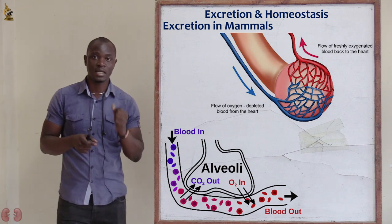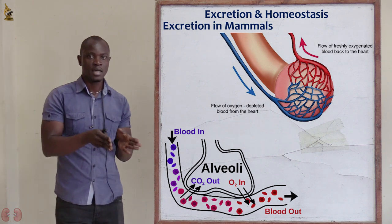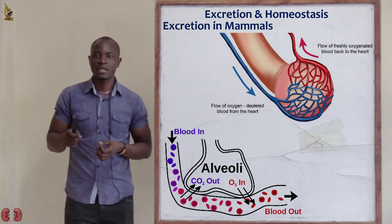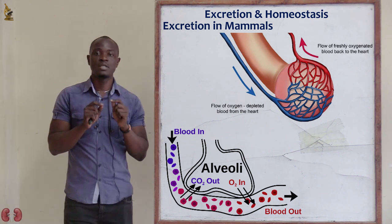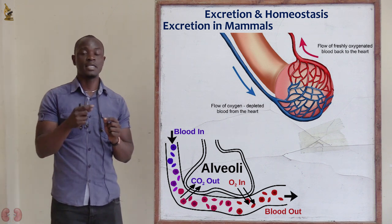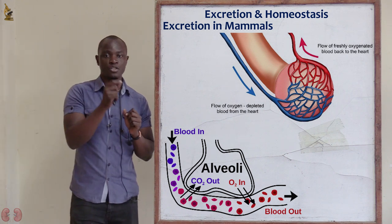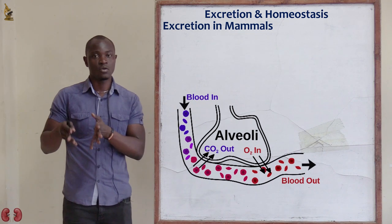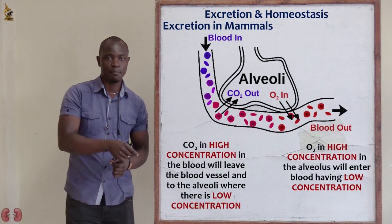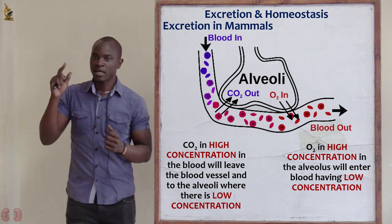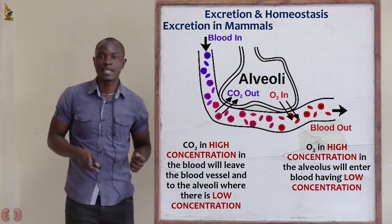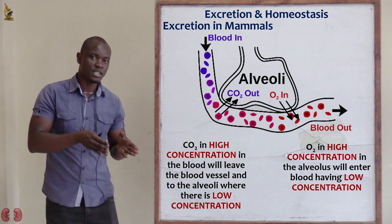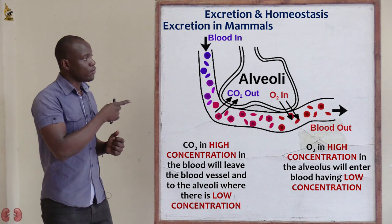Diffusion means molecules move from a region of high concentration to a region of low concentration. Since carbon dioxide concentration in the blood vessel is very high and low in the surrounding air, CO2 moves from the blood vessel into the surrounding air. Since oxygen is of high concentration in the surrounding air compared to the blood capillaries, oxygen diffuses from the surrounding air into the blood capillaries. That is exactly how gas exchange takes place through the lungs.